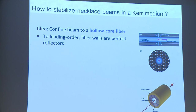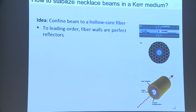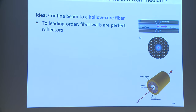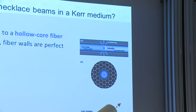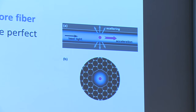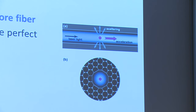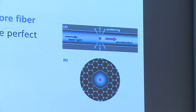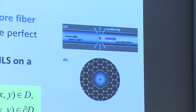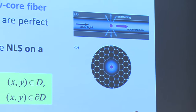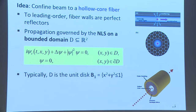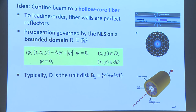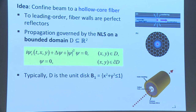Our goal is to stabilize a necklace beam in a Kerr medium. One idea used for 20 to 30 years is to confine the laser beam to a hollow core fiber — a fiber that is empty inside, filled with a nonlinear material such as air or a noble gas giving cubic nonlinearity. To leading order, the walls are completely reflecting, and the propagation equation is the 2D cubic NLS confined to the cross-section of the fiber, typically the unit disk, though other shapes are available experimentally.